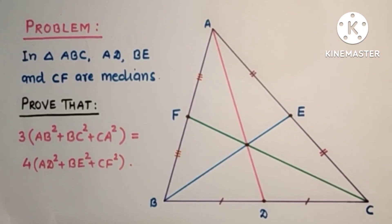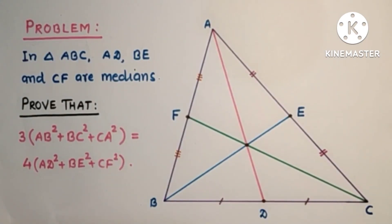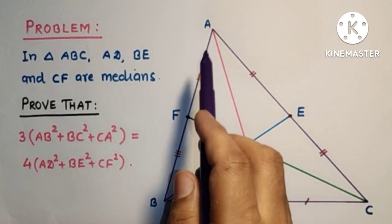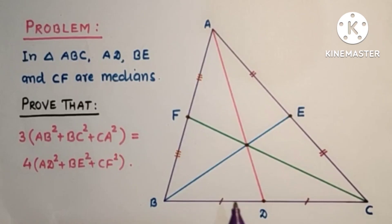So the question is: in a triangle ABC, AD, BE and CF are medians, and we have to prove that 3 times the sum of the squares of the sides of the triangle is equal to 4 times the sum of the squares of the medians.